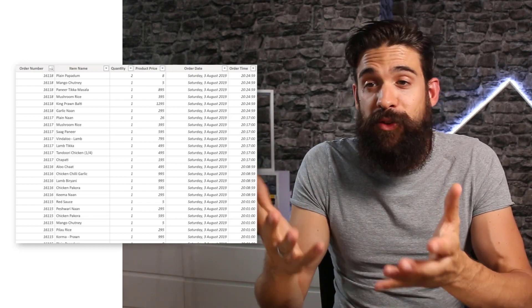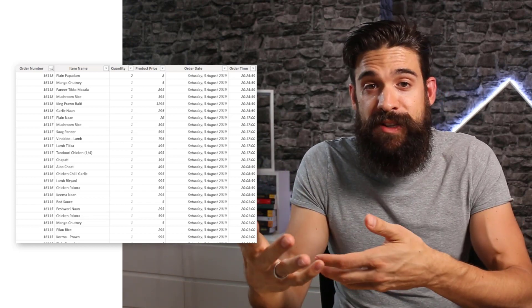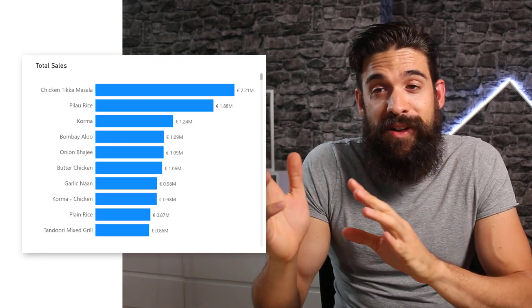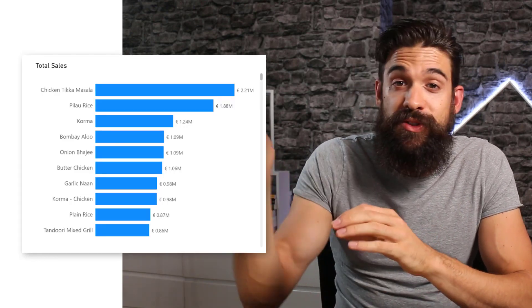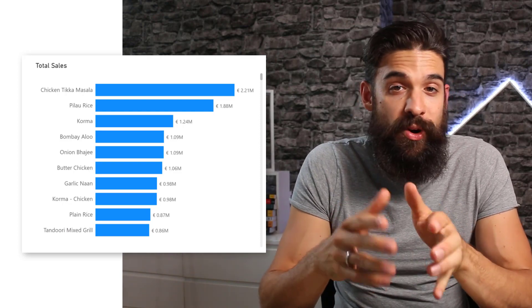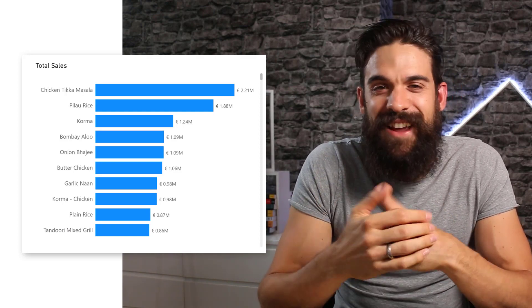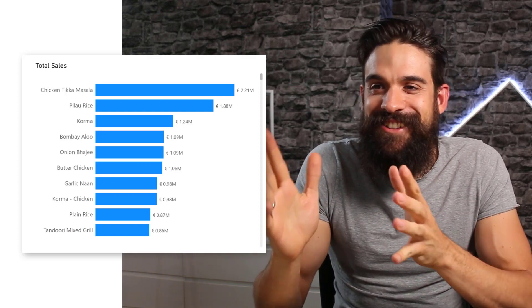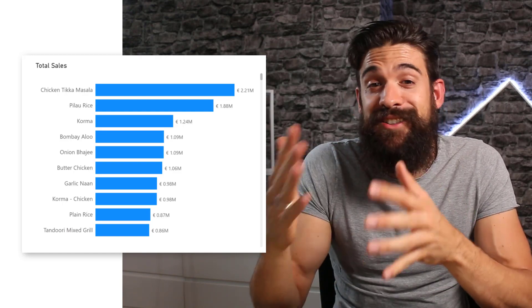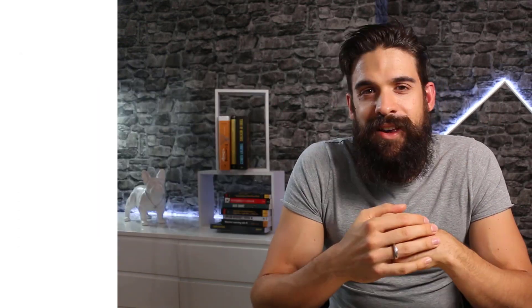You need this format to build some visualizations. As a quick test in the end, you also have to build a bar chart visual that shows the total sales broken down by the different product items. You will see that chicken tikka masala is the product that had the highest sales for this restaurant. All of the details you find in the comment section below, as well as on our website.